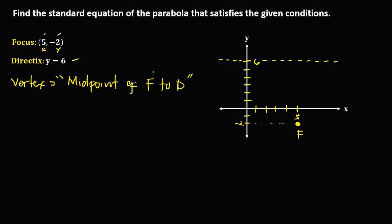We need to find the vertex, and since the vertex is the midpoint of the focus to the directrix, we first need to find the distance from focus to directrix. Using the counting method — start counting on the next point — the distance from focus to directrix is equal to 8.